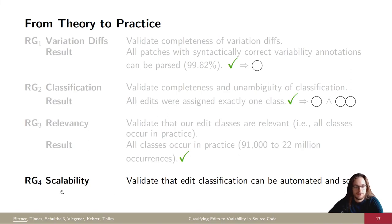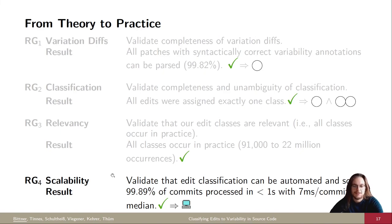And last, we also check on scalability, because we wanted to make sure that this classification can indeed be automated and that it scales. And we find that the majority of commits can be processed in less than a second, with 19 milliseconds per commit being the median, and so we conclude that the classification can indeed be automated.